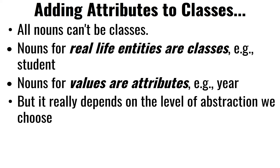So at first, obviously, all nouns can't be classes. Usually, if it's a value that you're capturing, typically those are attributes — they're just fields of something that is bigger. And if it doesn't have a value, then usually those are classes, made up of multiple values.